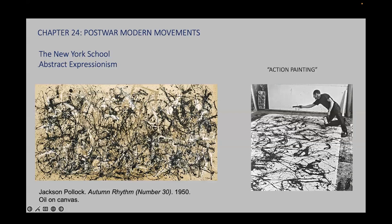He created Autumn Rhythm by using sticks as well as brushes to drip and pour paint onto the canvas. Working on huge canvases placed on the floor, Pollock was able to actually enter the space of the painting physically as well as psychologically. The huge format allowed ample room for sweeping gestural lines. Pollock would pour, drip, and fling the paint, yet he also exercised control and selection through the rhythmical dancing movements of his body.